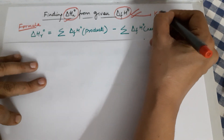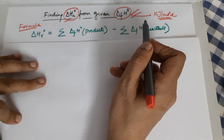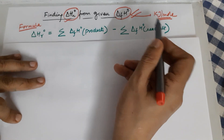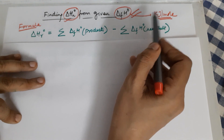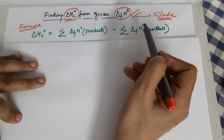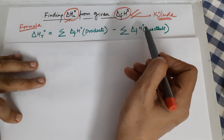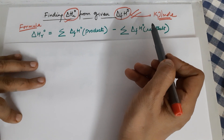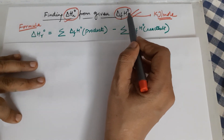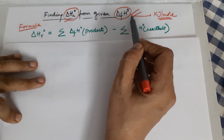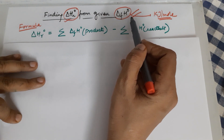The heat of formation values are in kilojoules per mole, which means if any of your reactants or products is more than one mole, you will have to multiply accordingly, since these values are per mole. For example, if your reaction has two moles of water, you will multiply the enthalpy of formation of water by two. If you are not already aware of enthalpy of formation, please watch my last video which was dedicated to that topic.